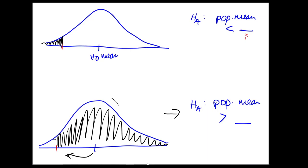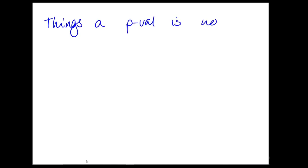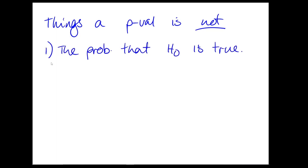There are a couple of things that a p-value is not, but that pop up as misconceptions all the time — including in a Nature article I read, which issued a correction along those lines. First: p-values are not the probability that the null hypothesis is true. There's no probability involved in the true state of the null or alternative hypothesis — it's either true or not in the real world. If you're doing a hypothesis test on a COVID test, your person either has COVID or doesn't. The true state of the hypothesis is fixed.